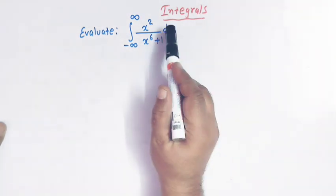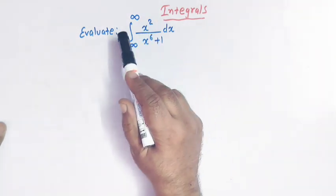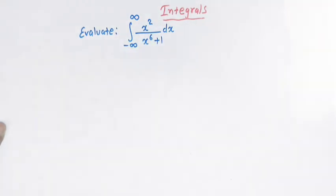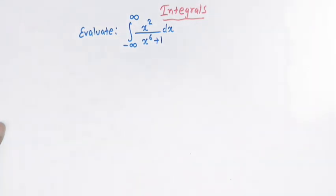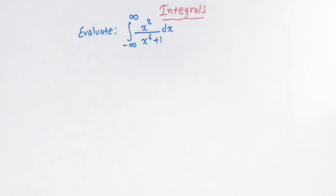We can also solve this integral by contour integration, but we'll take up that topic very shortly. So let us solve this integral by first using the method of substitution and then by applying the properties of beta and gamma functions.